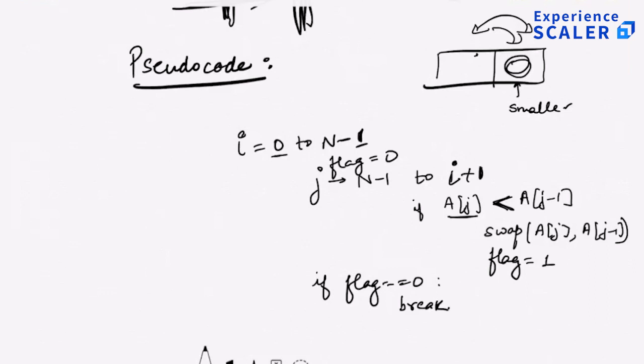Actually, this should be I+1, correct. So again, what is happening in the algorithm is the smallest element is bubbling to the top, and you're making sure that if the remaining elements are in the right place with no swap, you just break. We don't need N−1 for the outer loop; I can just do N−2.